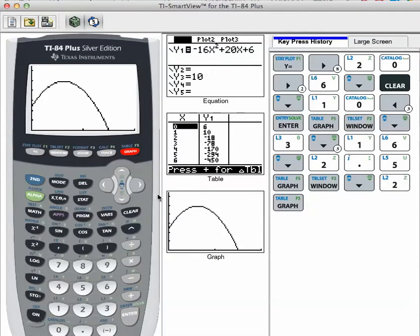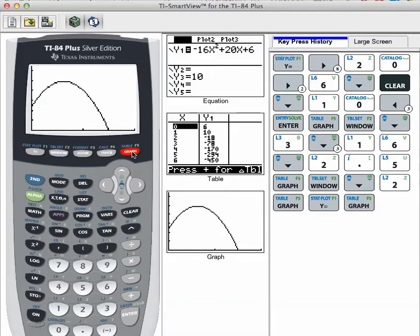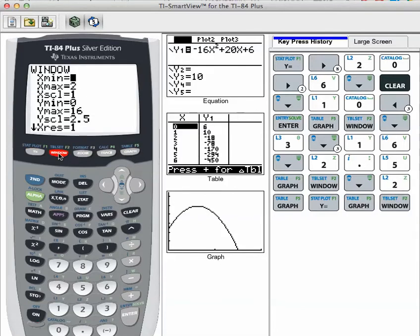And down here, I've got this typed in already. You can see I've just typed in negative 16x squared plus 20x plus 6. And our graph then, I've adjusted to the window. I know, actually, let's go to the window for a second.